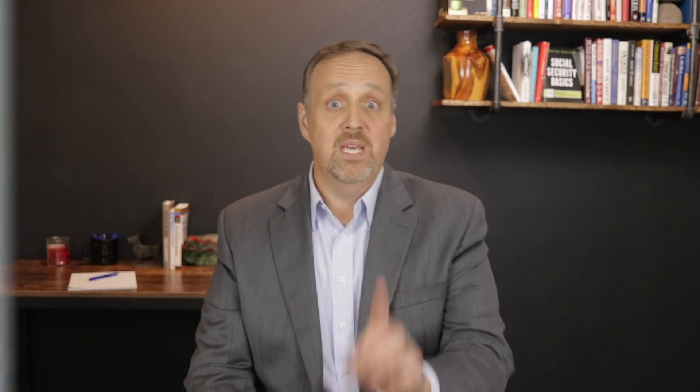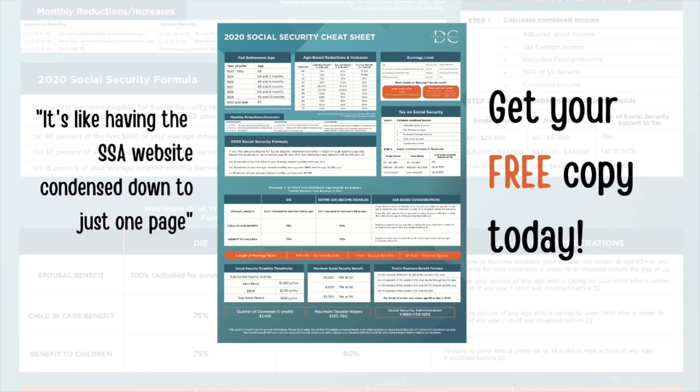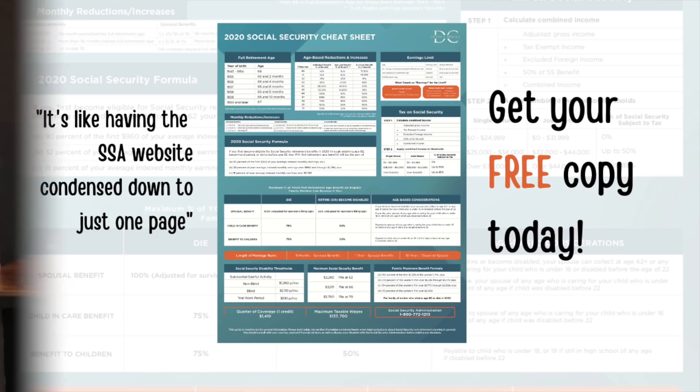Also, be sure to get a copy of my Social Security Cheat Sheet. This is where I've taken the most important rules and numbers from the massive Social Security website and condensed it down to just one easy-to-read page. And if you get this year's version, I'll automatically send you the new ones when I update them every year. There's a link in the description where you can get yours, and it is free.